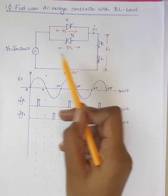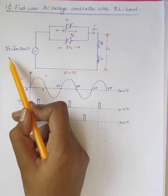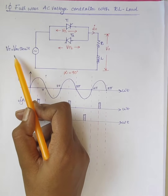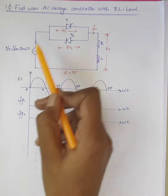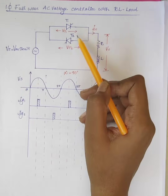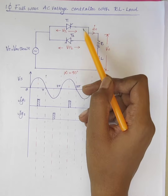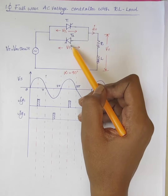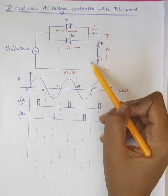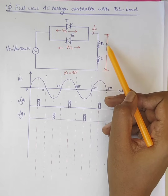It consists of supply voltage Vs equal to Vm sin(ωt). Two SCRs T1 and T2 are connected in anti-parallel, and an RL load.